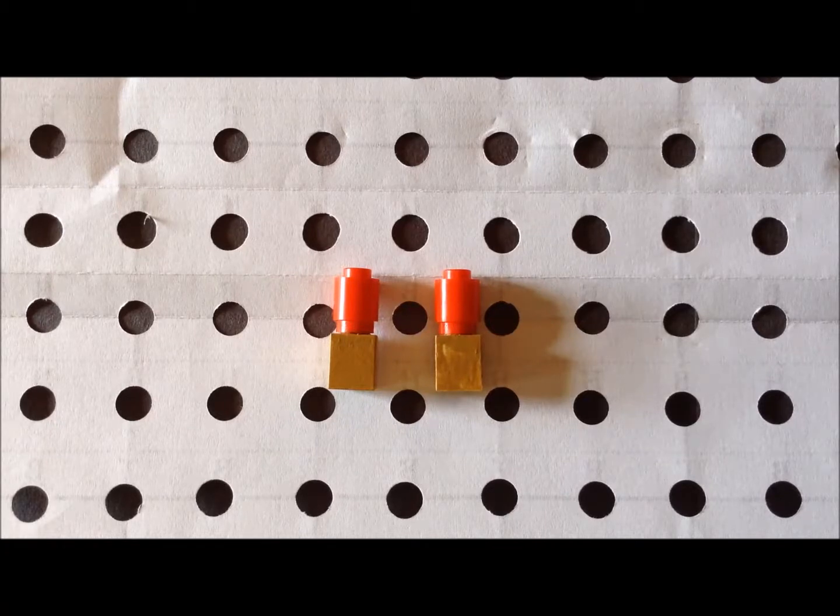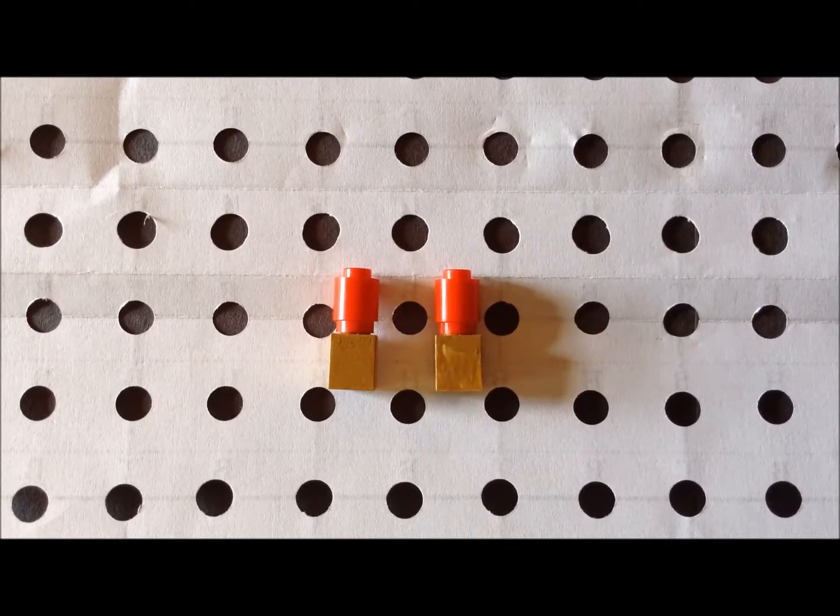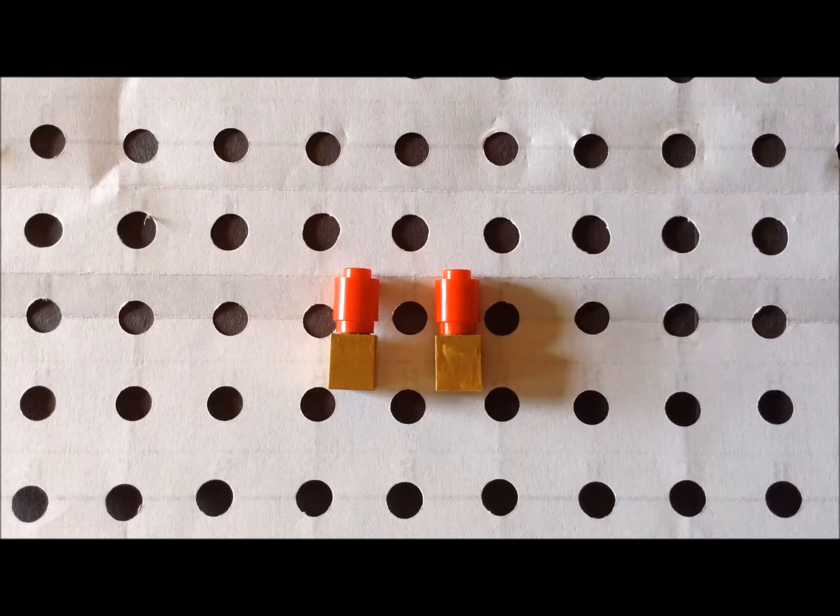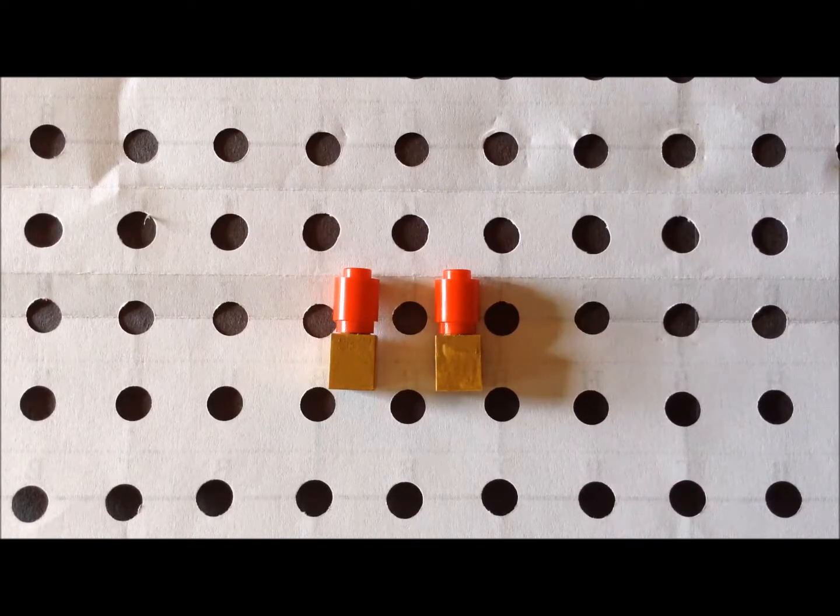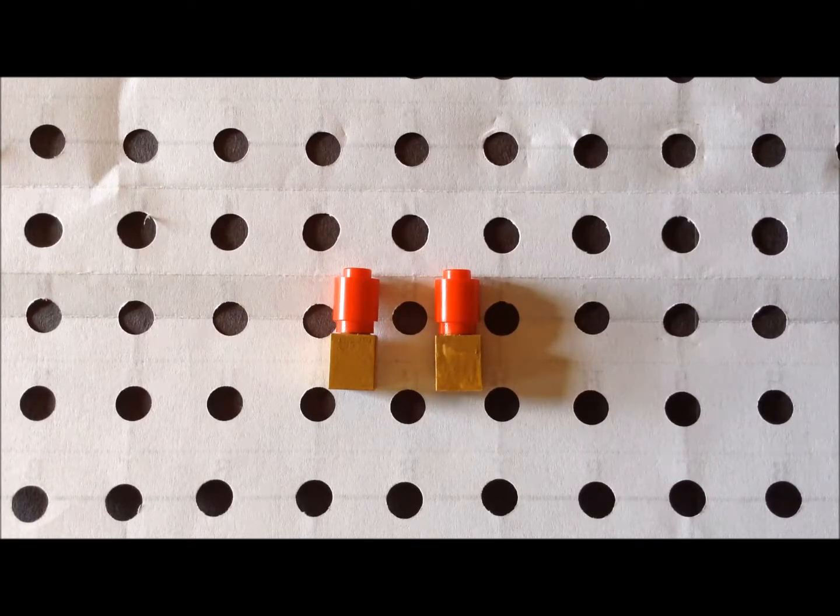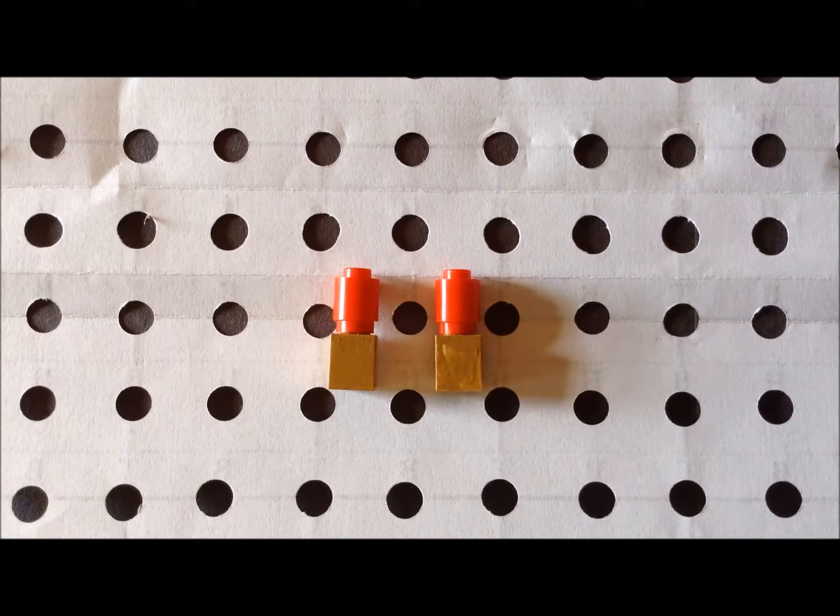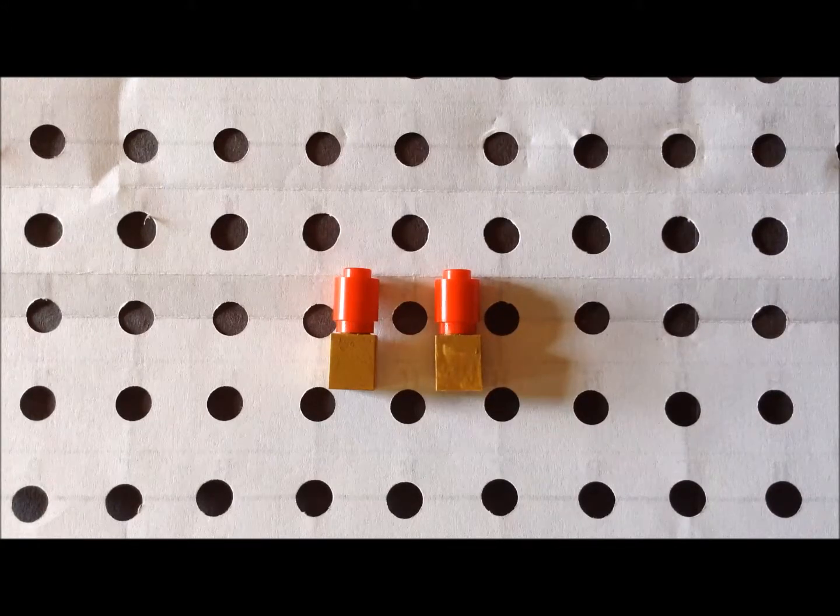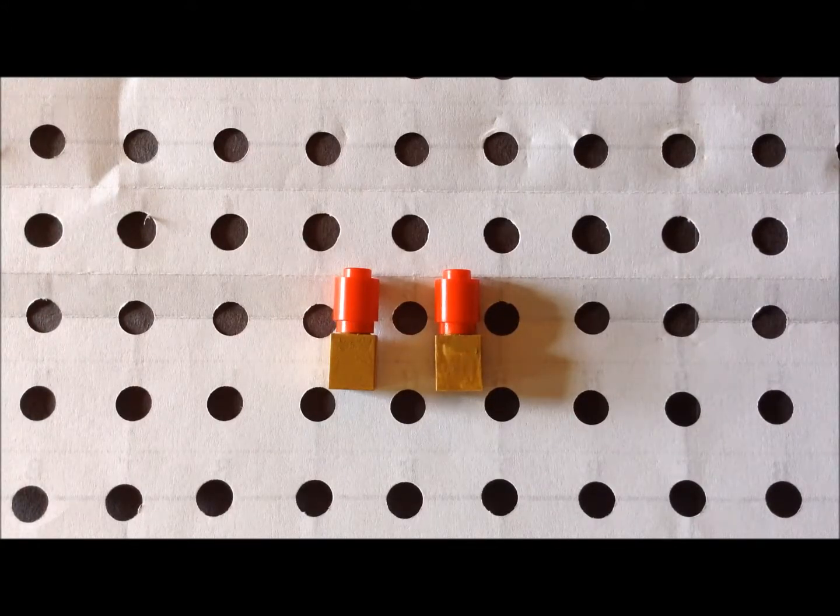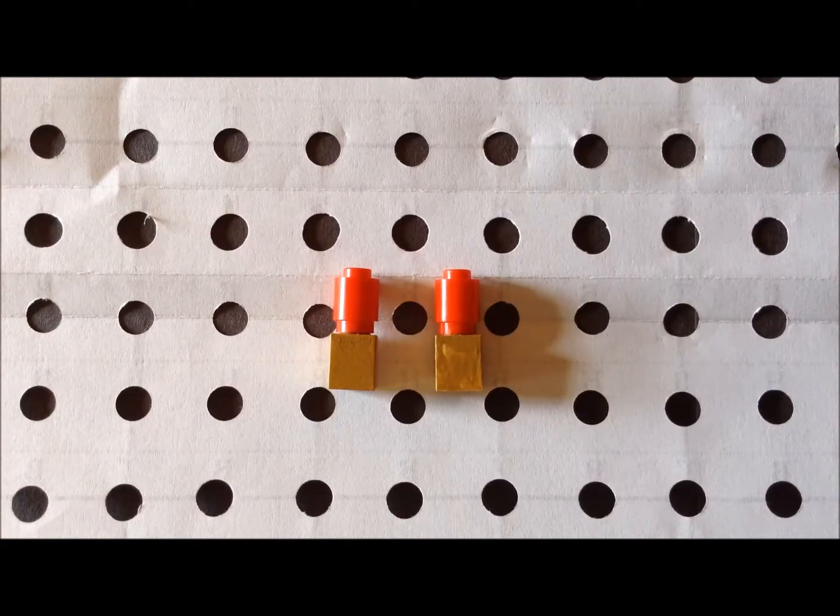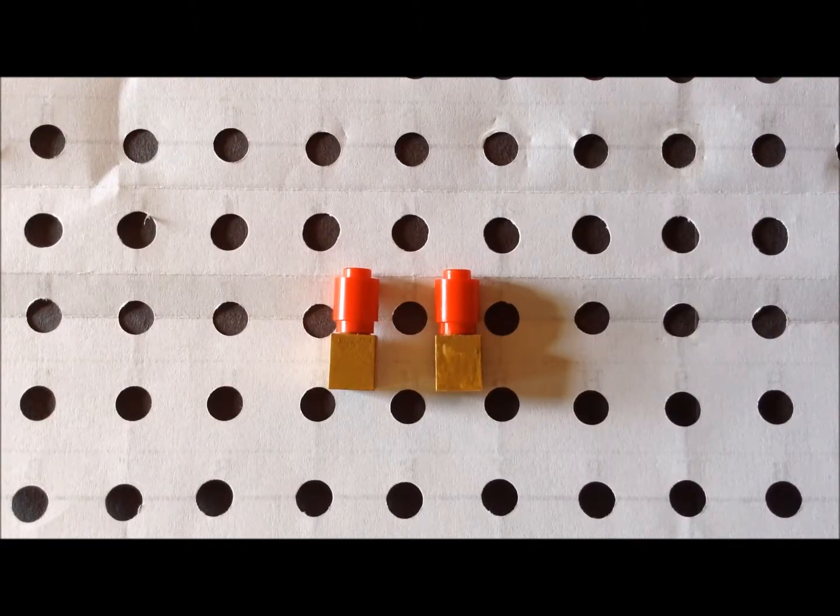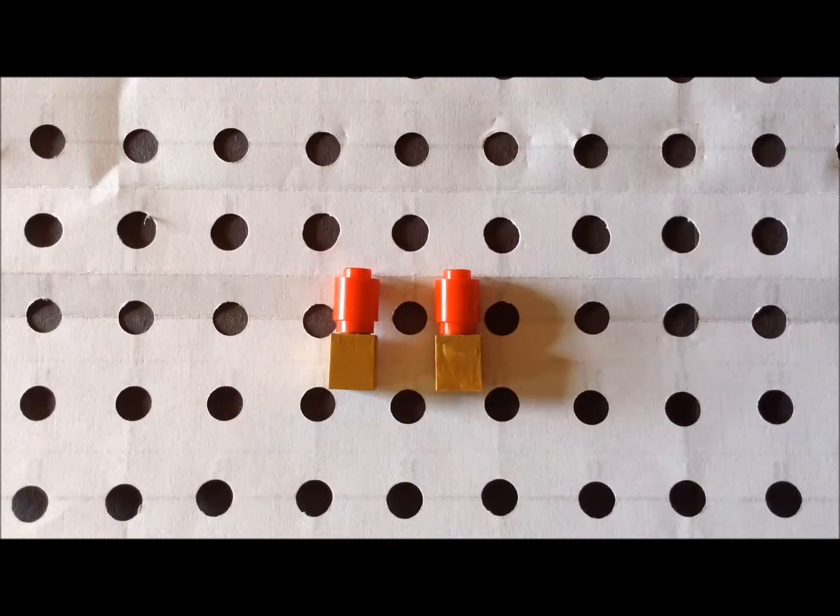Since we are using red to denote oxygen atoms, we can model dioxygen O2 with two red round bricks. Typically, oxygen binds side by side with each oxygen atom binding to the surface. So essentially, it is parallel to the surface in many cases.